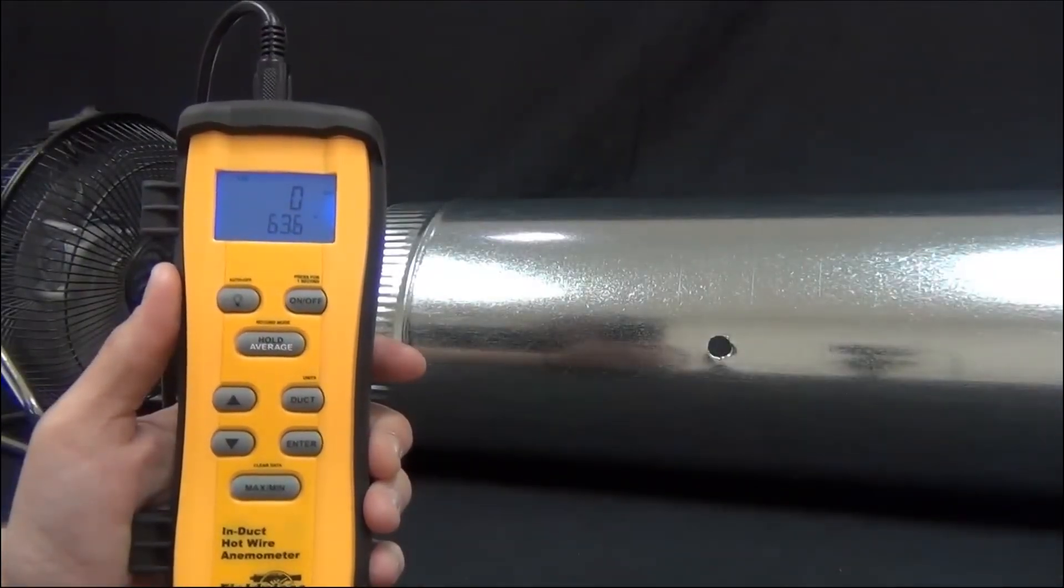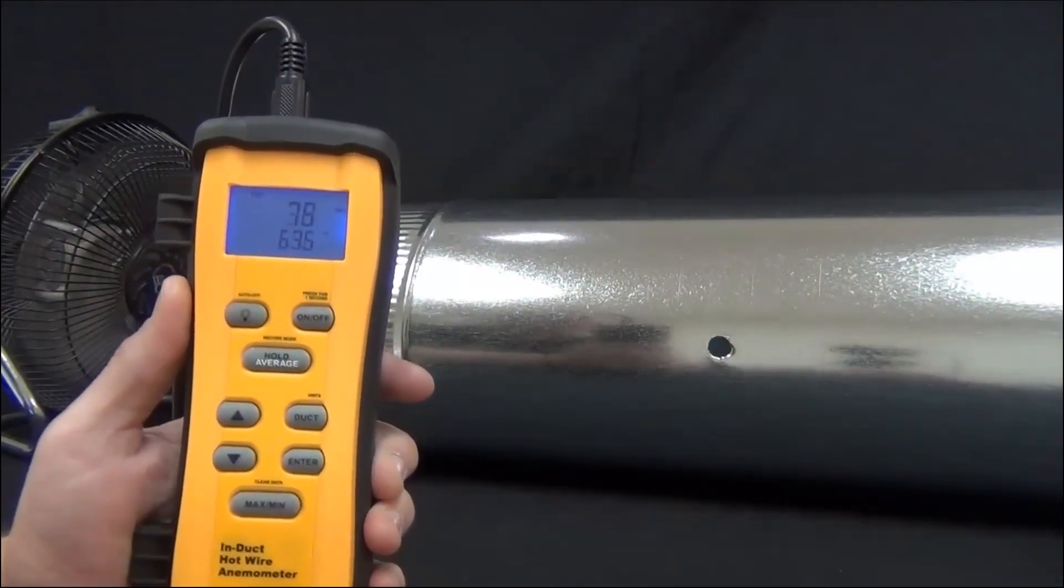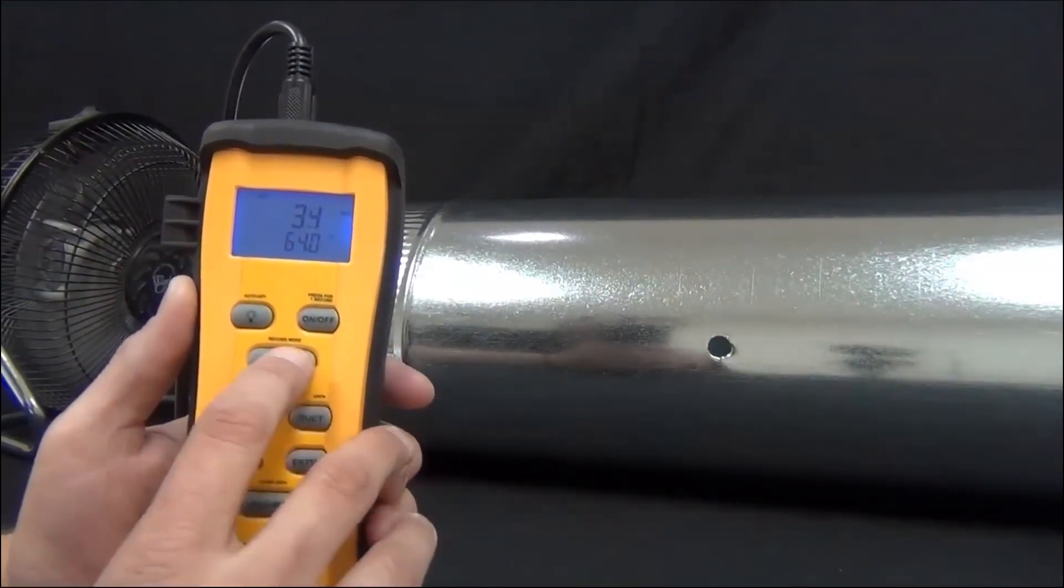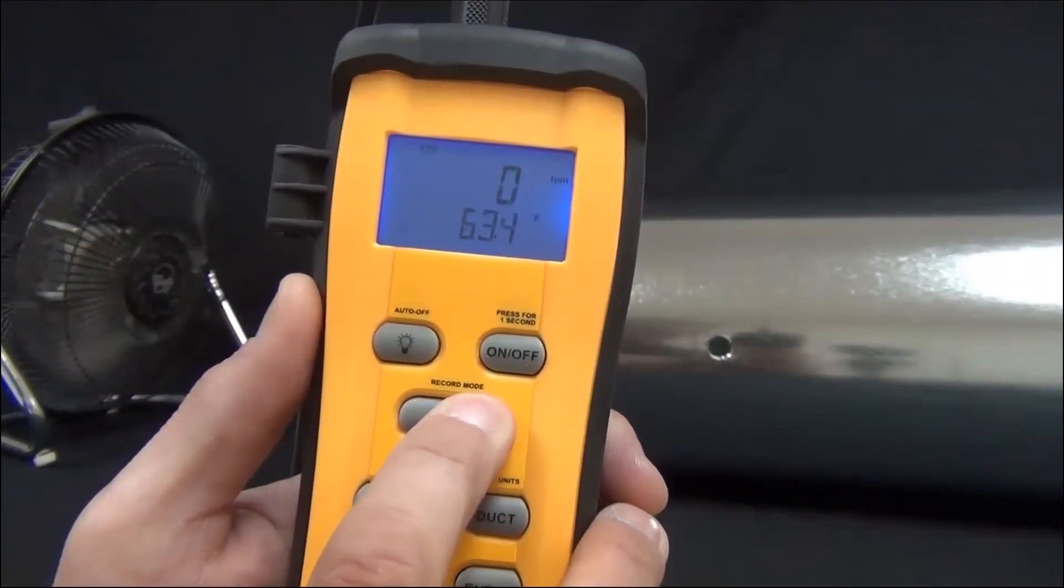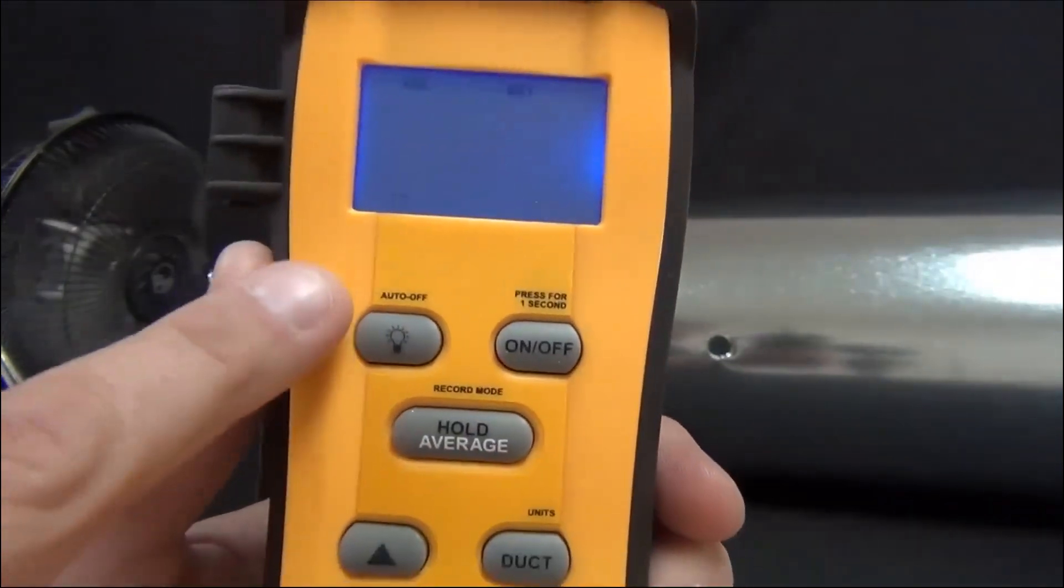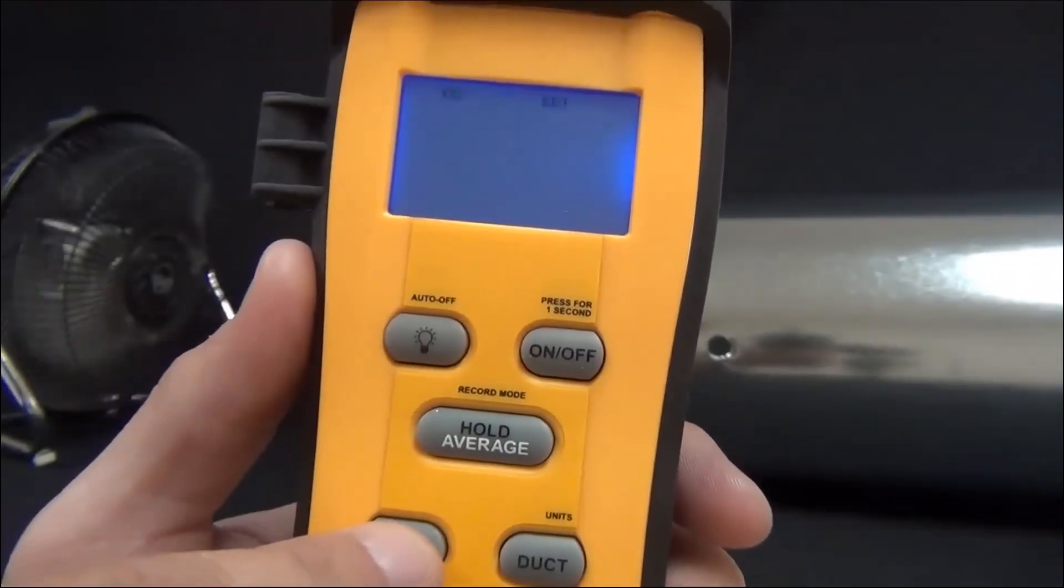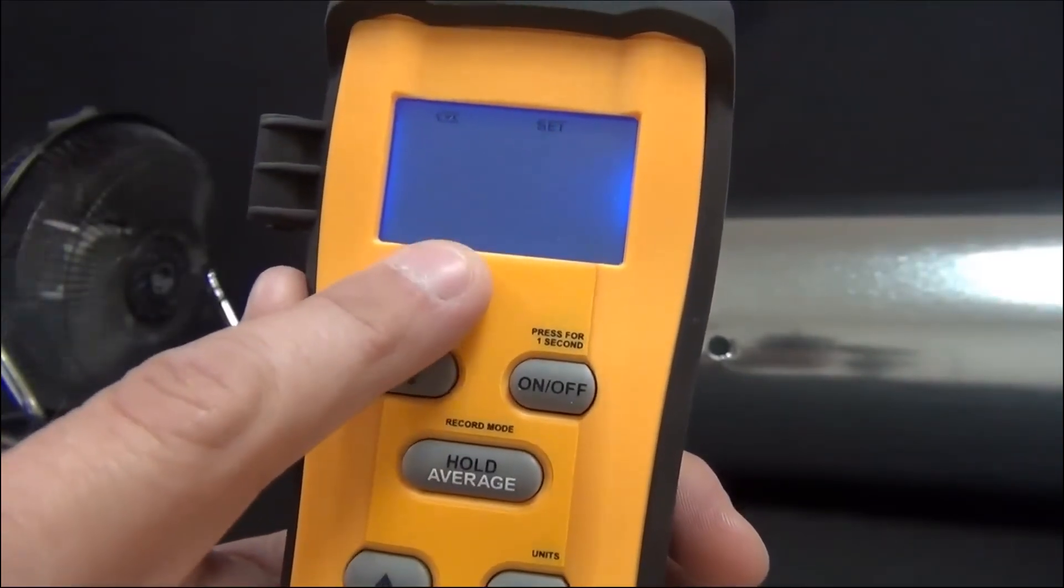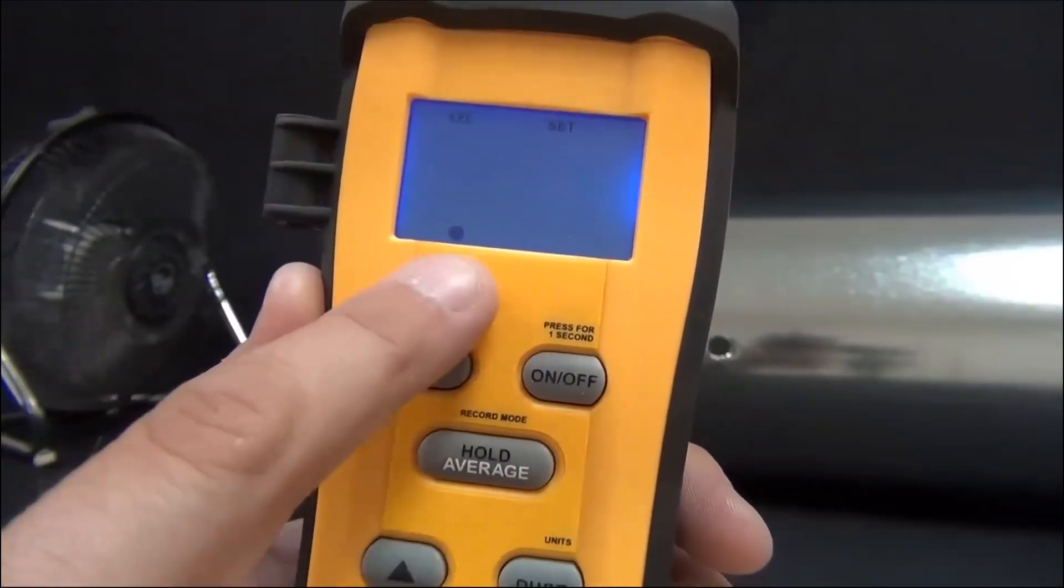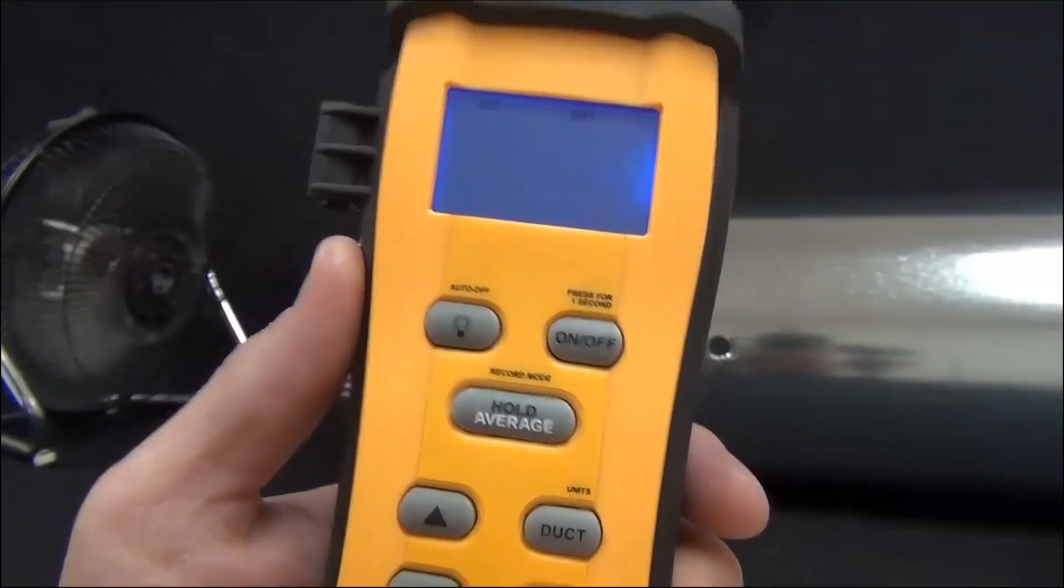All right, now what I'm going to show you is getting the average CFM using the point method. So what I'm going to do is press and hold the record mode button again. And it's going to still show me that timer for the timed average mode. To switch modes, I just press the up arrow and I can get to select my point method. So I'm going to press enter to get that.